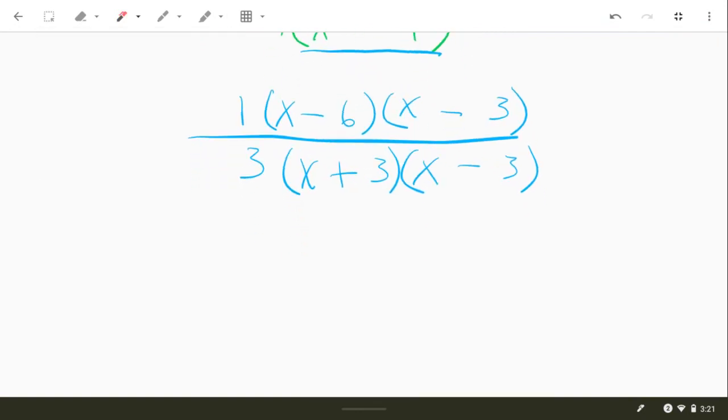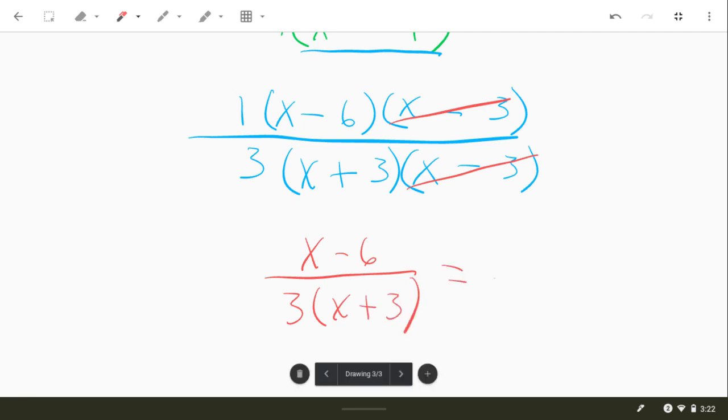Okay. Last step here. Notice because you have a factor in the top and bottom, this x minus 3 and x plus 3, you can cancel those factors. There's going to be an x minus 6 left up top, and then a 3 x plus 3 in the bottom. That's probably good for your answer there.